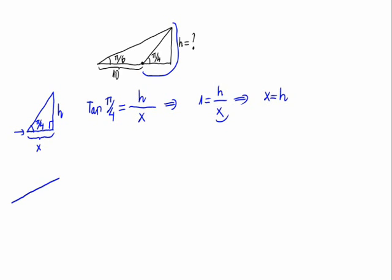Now, let's work with the big triangle. This would be pi/6, this is 90 degrees, this is h. If we have assumed x this from here to here, it would be 10 plus x.